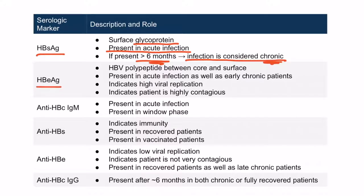The E antigen is that polypeptide lying between the core and the surface. Just like the surface antigen, the E antigen is present in acute infections and in the early chronic phase for patients who end up developing chronic hepatitis B. The presence of the E antigen indicates high viral replication is taking place, and therefore it also indicates that the patient is highly contagious or infectious.